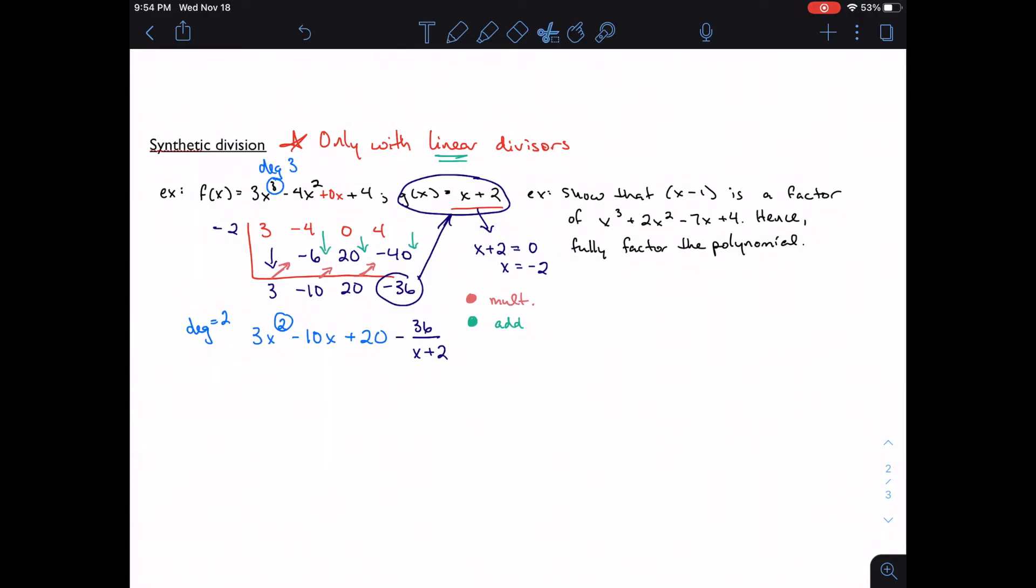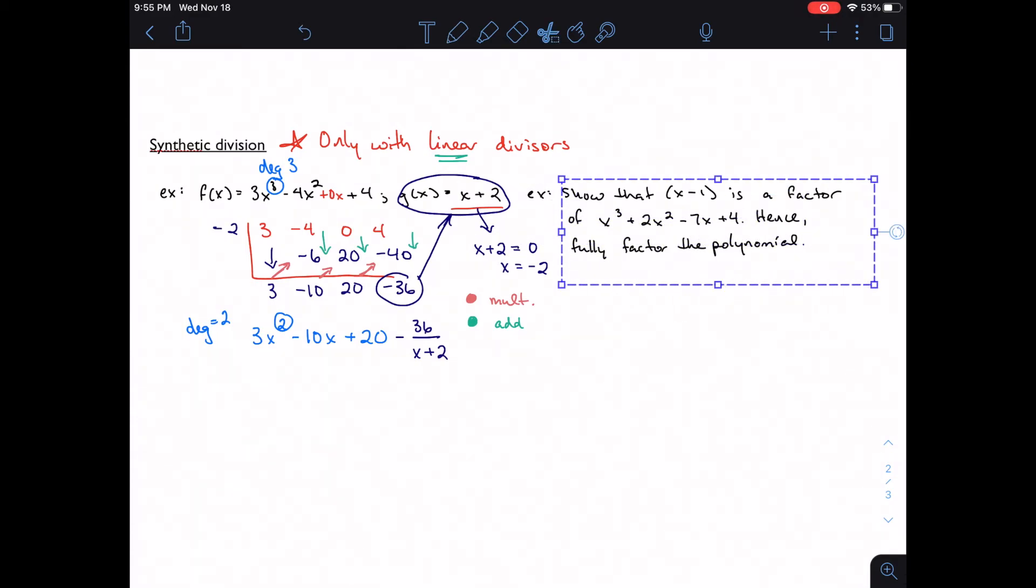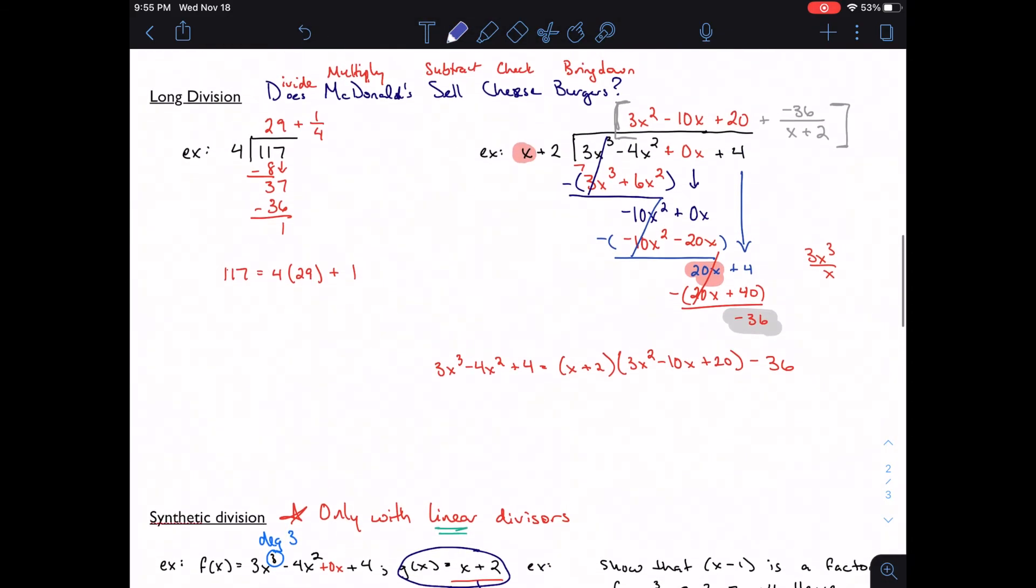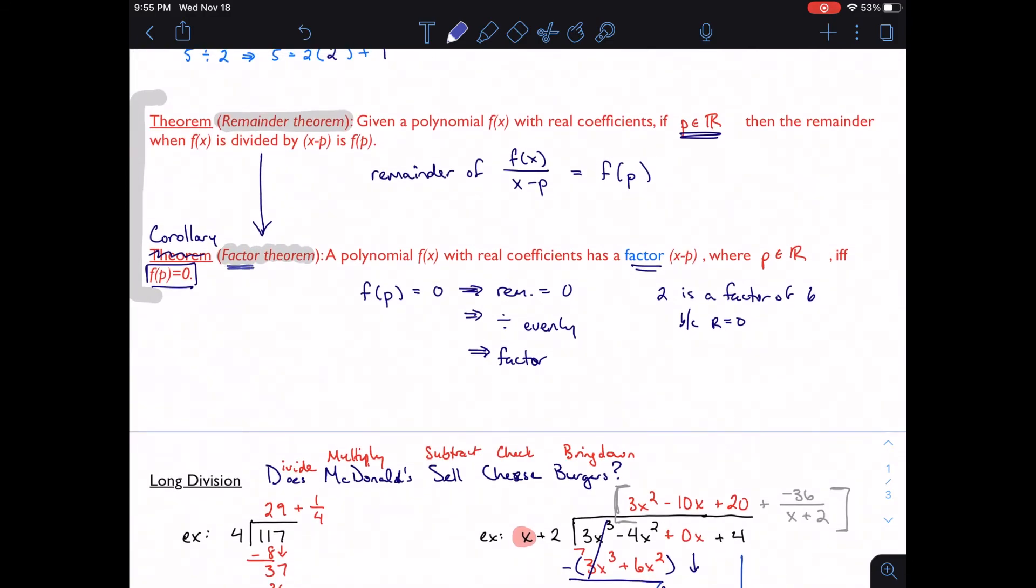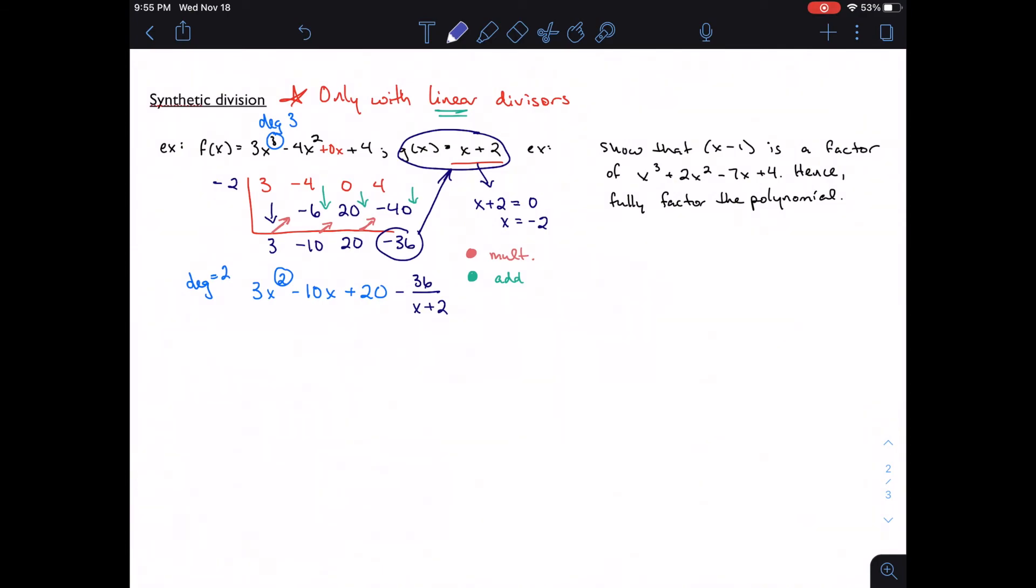But one kind of big problem that I want to look at is this one on the side here. Show that x minus one is a factor of the polynomial that I gave you. Hence, fully factor the polynomial. Well, let's use our factor theorem. Right? If something is a factor, I should be able to divide by that factor and end up with zero. So let's see that this works. If I'm dividing by x minus one, I'm going to put a one outside the box. I'm going to line up all of my coefficients. I can see that I'm not missing any terms. Bring down, multiply, add, multiply, add, multiply, add. I get a zero.